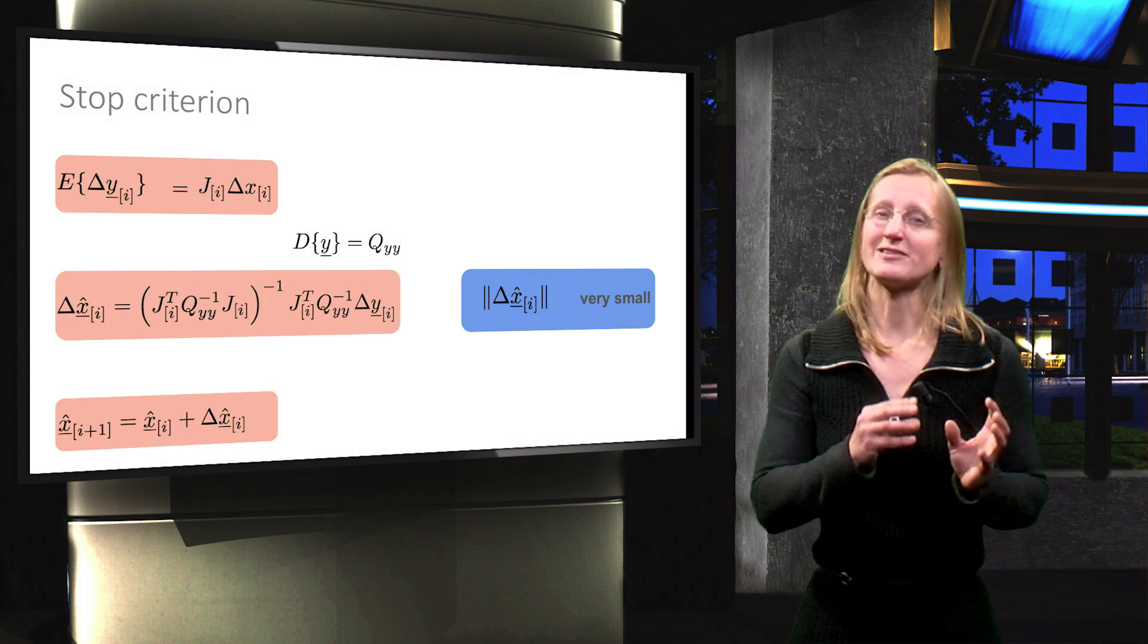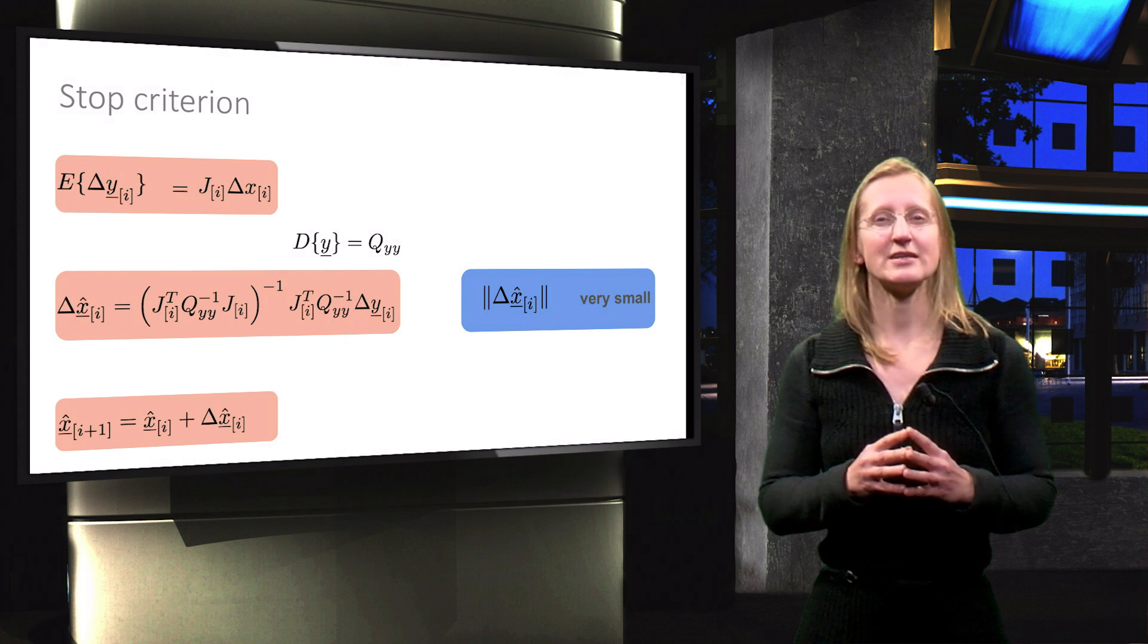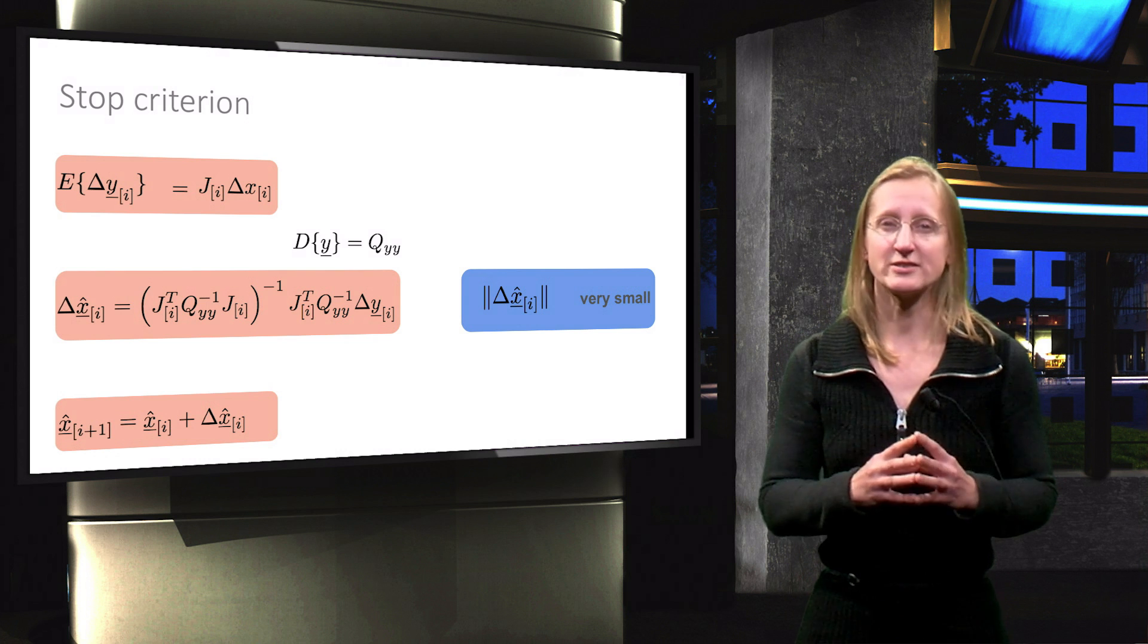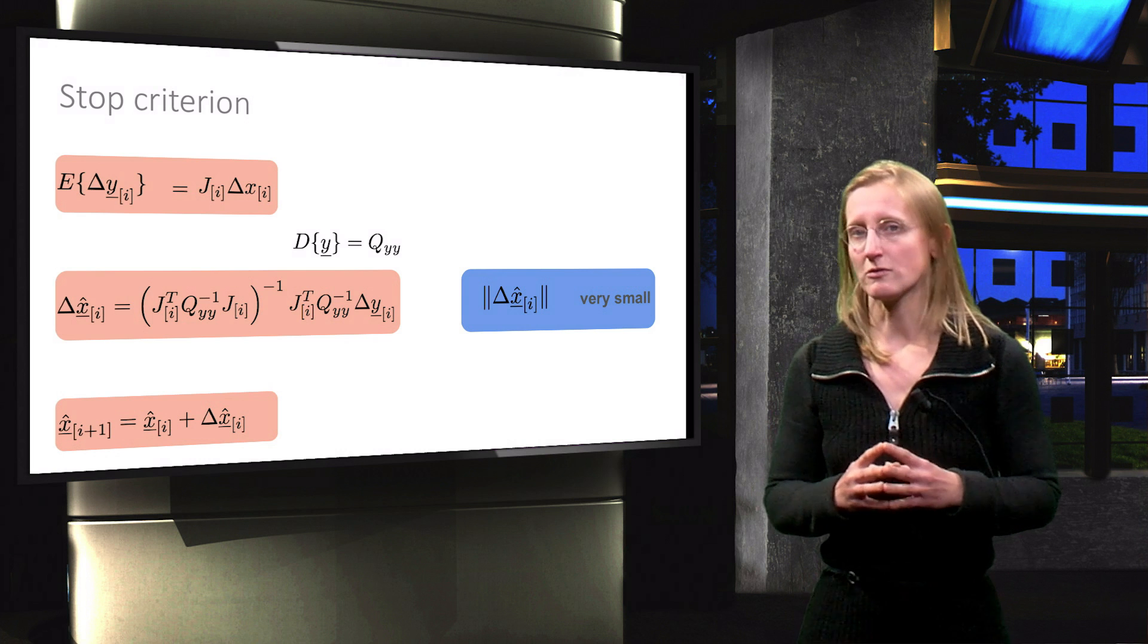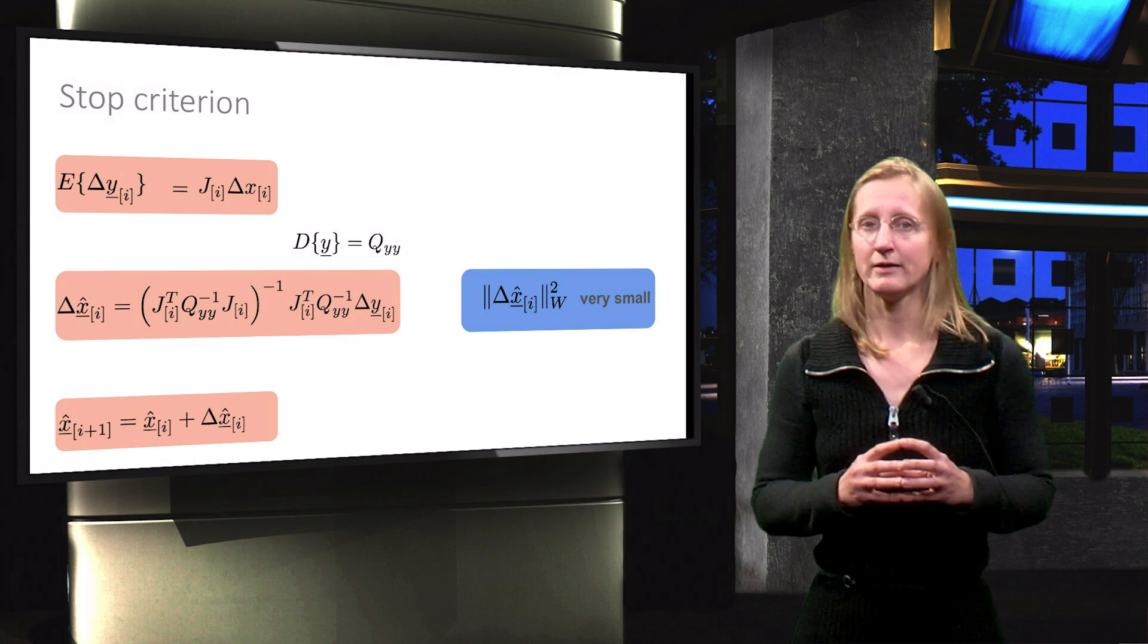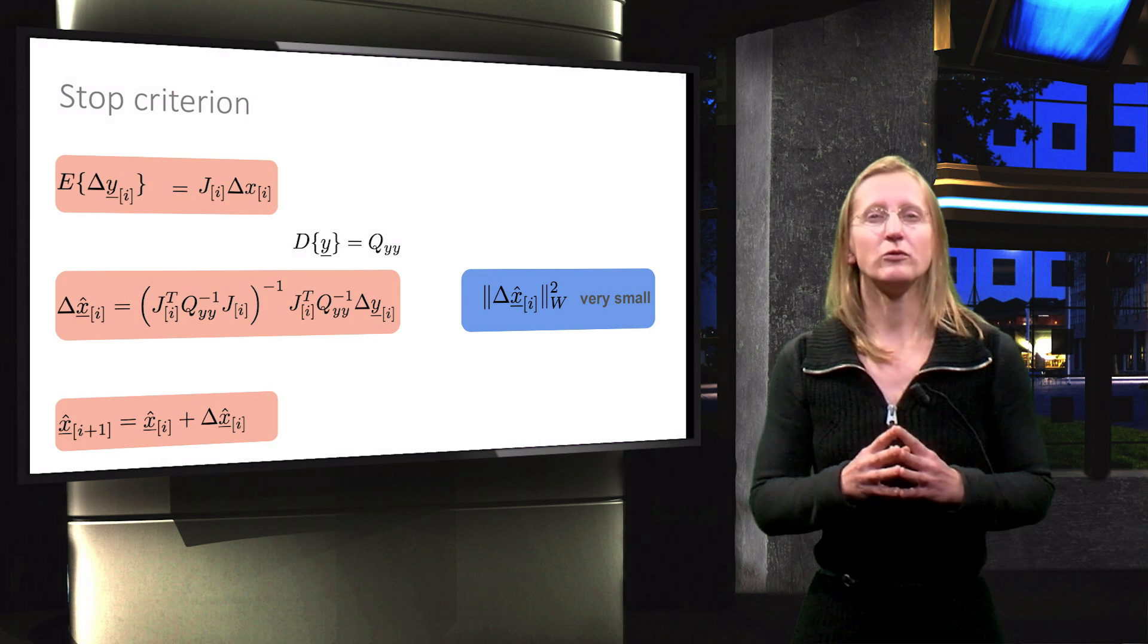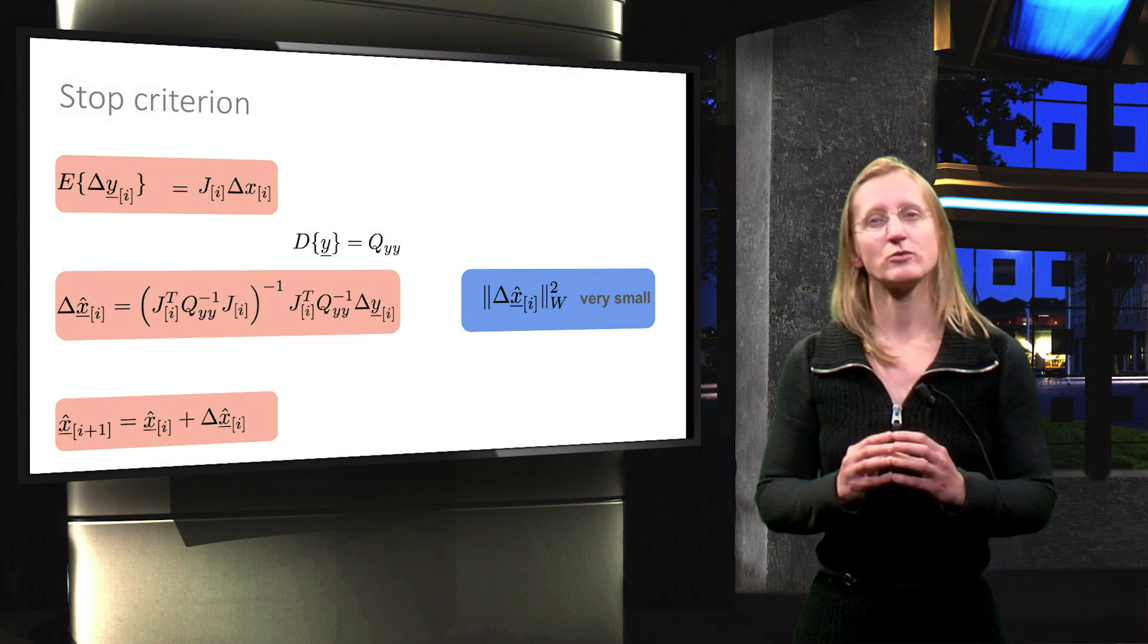However, since we may have different types of quantities in x, it may be even better to use different weights for the components in x and as such look at the weighted squared norm. With this we have all the tools for non-linear least squares estimation. But there are still a few remarks to be made.